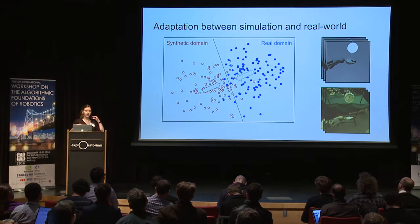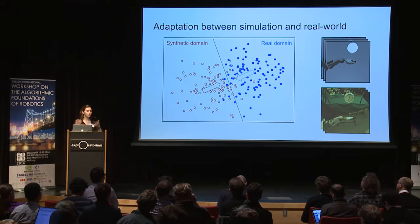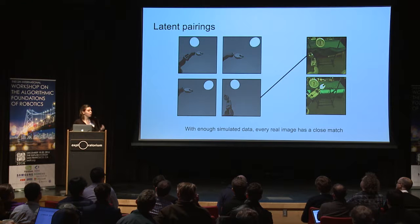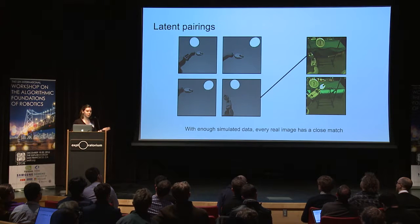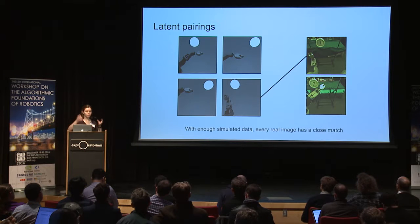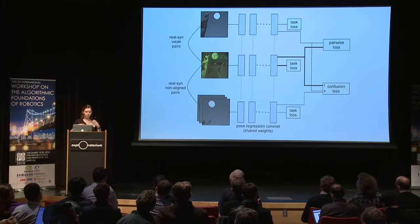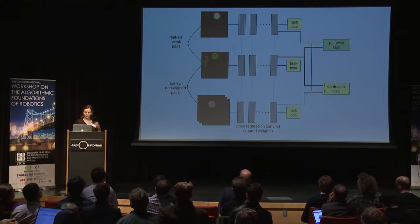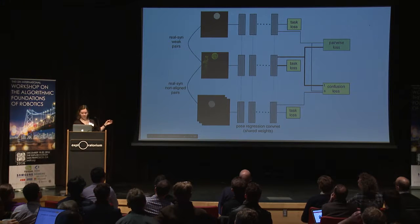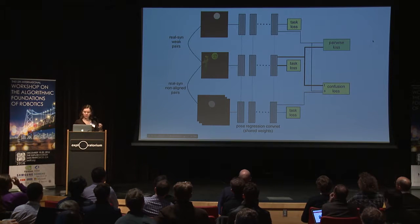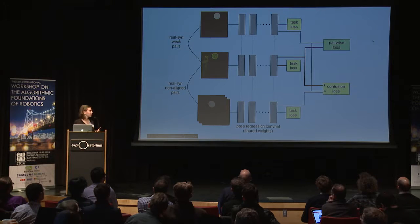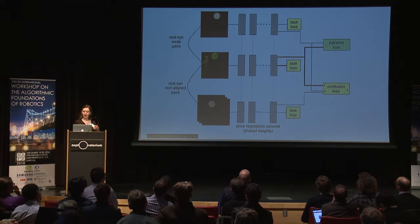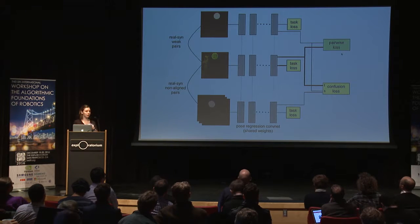Since the simulated and real data have a possible pairing, we assume there exists a one-to-one mapping between datasets that we don't know. If we have enough simulated data, then for each image in our small set of real images there should be a paired synthetic image we can find. If we can find it, we can apply metric learning approaches to force these paired images to be close together. Having found these pairs, we construct our network to learn an invariant representation using both domain confusion and a pairwise loss that forces paired images to lie close together in feature space.